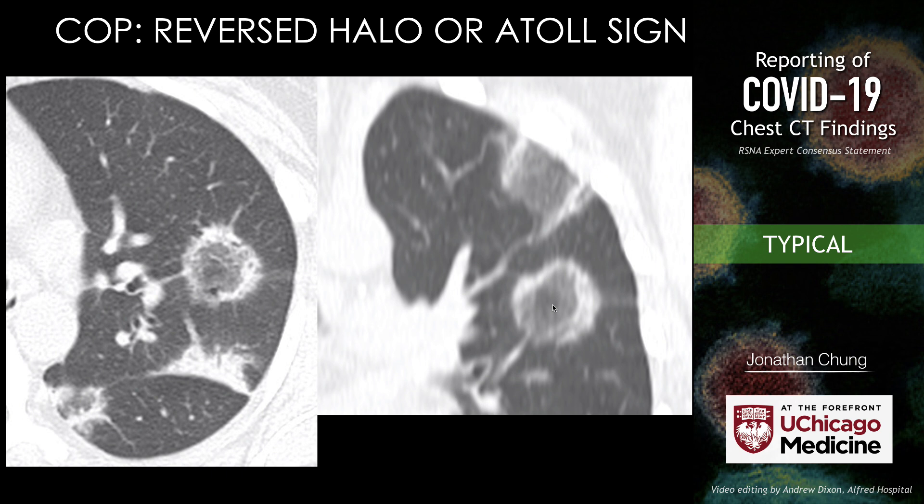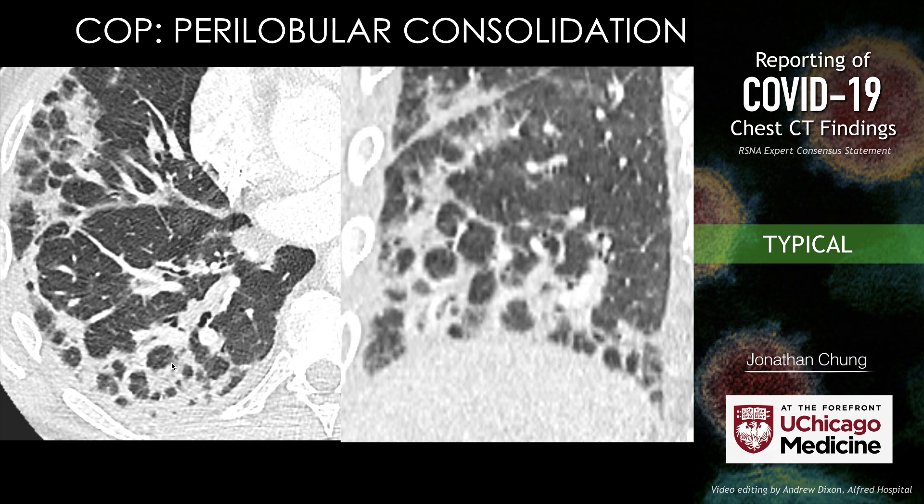This is a patient with reverse halo or atoll sign who has cryptogenic organized pneumonia — this patient did not have COVID-19, but I'm demonstrating the classic imaging appearance of the reverse halo or atoll sign. You have a surrounding rim of consolidation with central ground glass opacity. Oftentimes the rim is incomplete. Here's a less recognized pattern of organized pneumonia: the perilobular consolidation. Typically I see this perilobular consolidation at the lung bases in cases of organized pneumonia. It's been described in the literature but people don't talk about it much — and more often than not, it does turn out to be organized pneumonia.